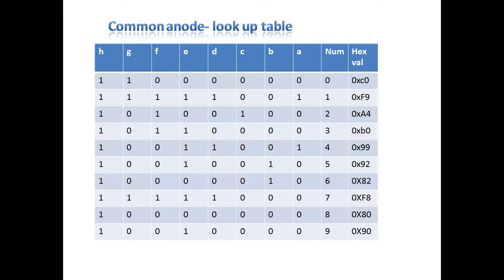For the common anode case, the common pin is connected to VCC. Whenever you want to turn on a particular segment, you have to assign zero to that LED of your segment. The anode is given to the supply source, so you drive the cathode with your logic — cathode expects zero to turn on that segment. For displaying zero, except G and H all segments are on, giving the hex value 0xC0. For displaying one, only B and C are on, so B and C get logic zero and others get one, giving value 0xF9.